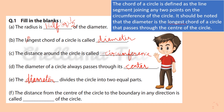The distance from the center of the circle to the boundary in any direction is called the radius of the circle. Circumference. Radius.